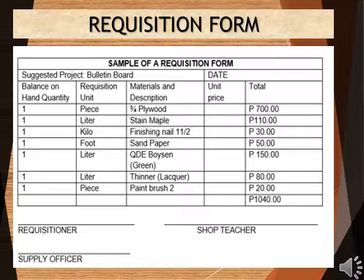Here is an example of a requisition form. For this example, the name of the project is the Bulletin Board. In making a Bulletin Board, they need 1 piece 3/4 plywood, 1 liter stained maple, 1 kilo finishing nail, 1 foot sandpaper, 1 liter Boysen paint, 1 liter thinner, and 1 piece paint brush. For this project, the total cost will be ₱1,040.